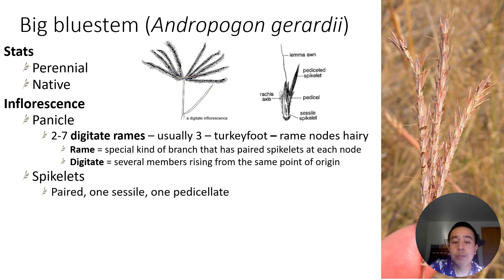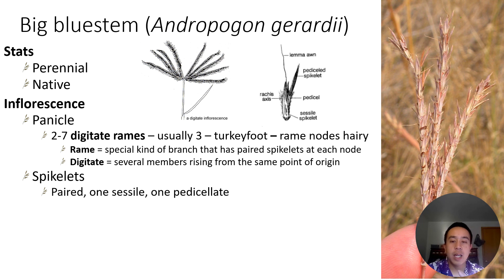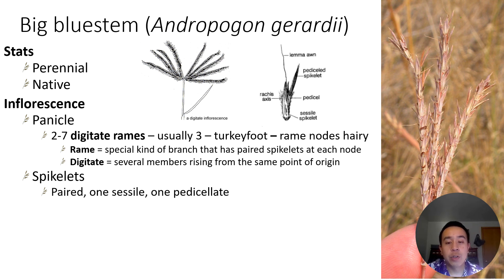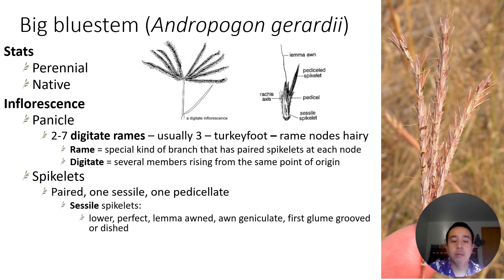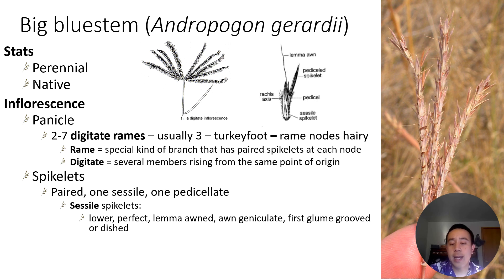Next, we have the spikelets, and often the spikelets are paired. There's often one sessile and one pedicillate spikelet, and I have a diagram in the slide so you can see what a sessile and pedicillate spikelet looks like. A sessile spikelet lays directly on the node, whereas the pedicillate spikelet comes out on a small pedicel. The sessile spikelets — specifically the lower ones — are typically what we call perfect, meaning they have all the floral parts. And the lemmas are awned.